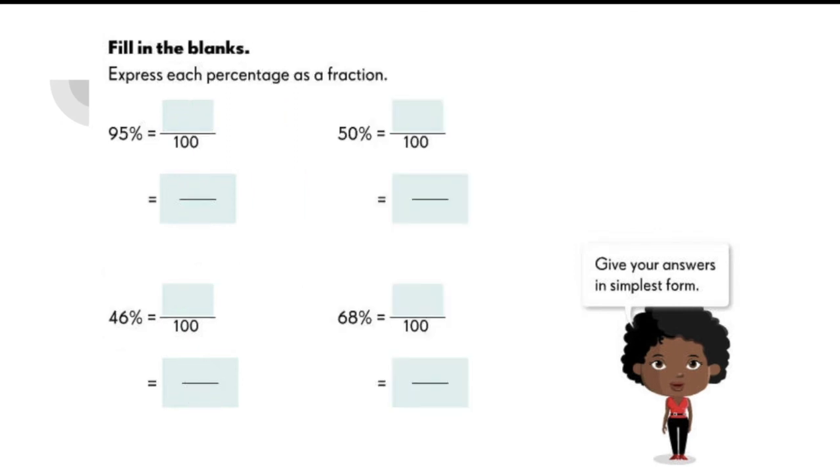Now try answering this on your own. 95% over 100 is equal to 19 over 20.